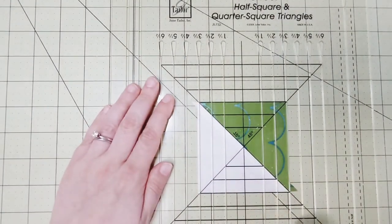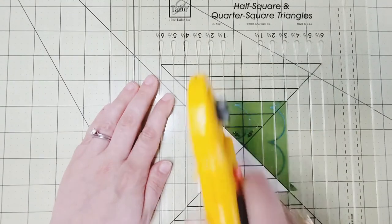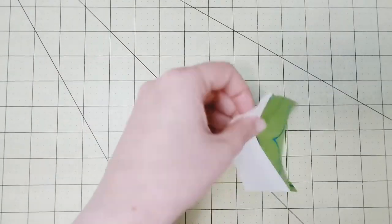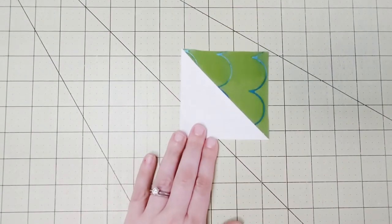And now you can trim your left and your right again. And there you go, your perfectly trimmed half square triangle.